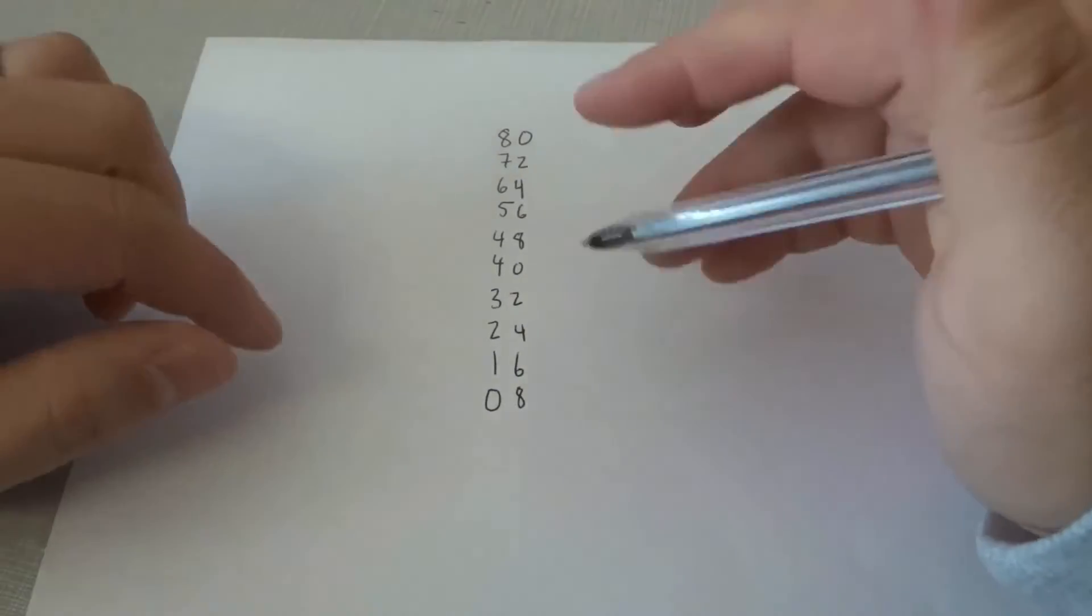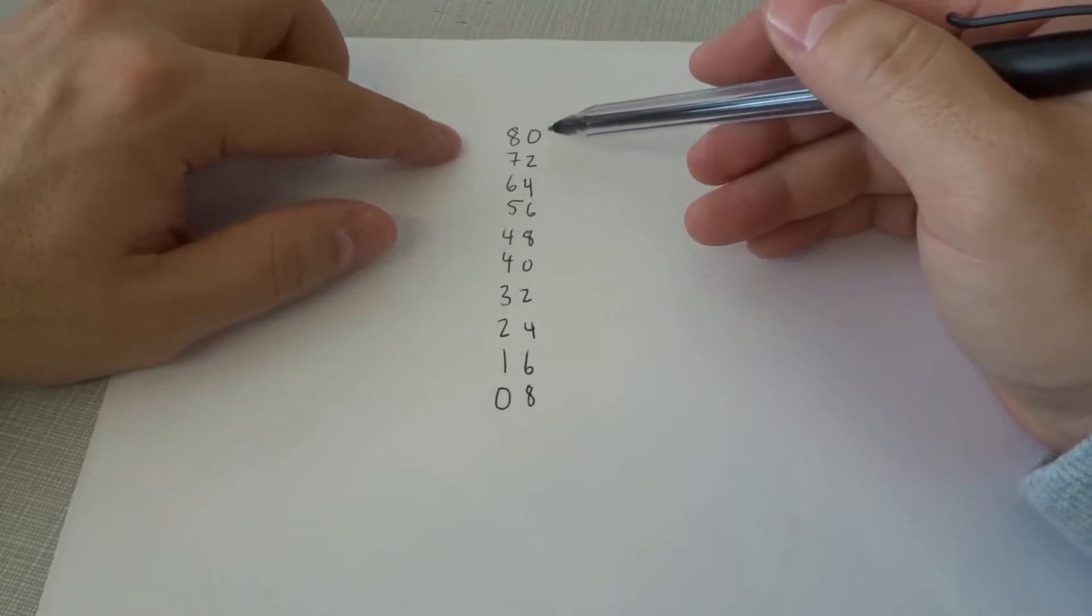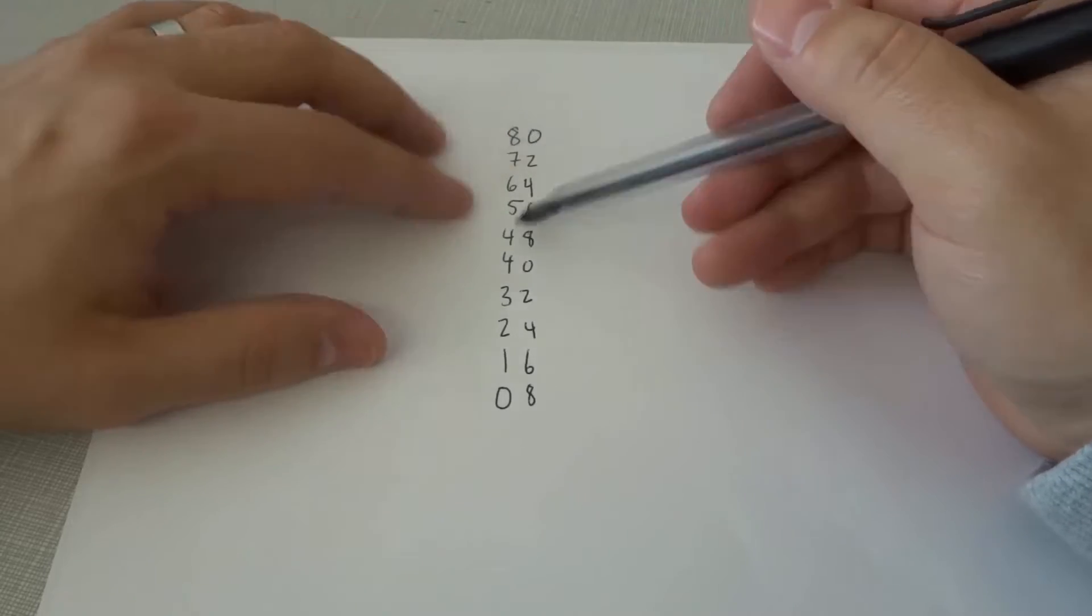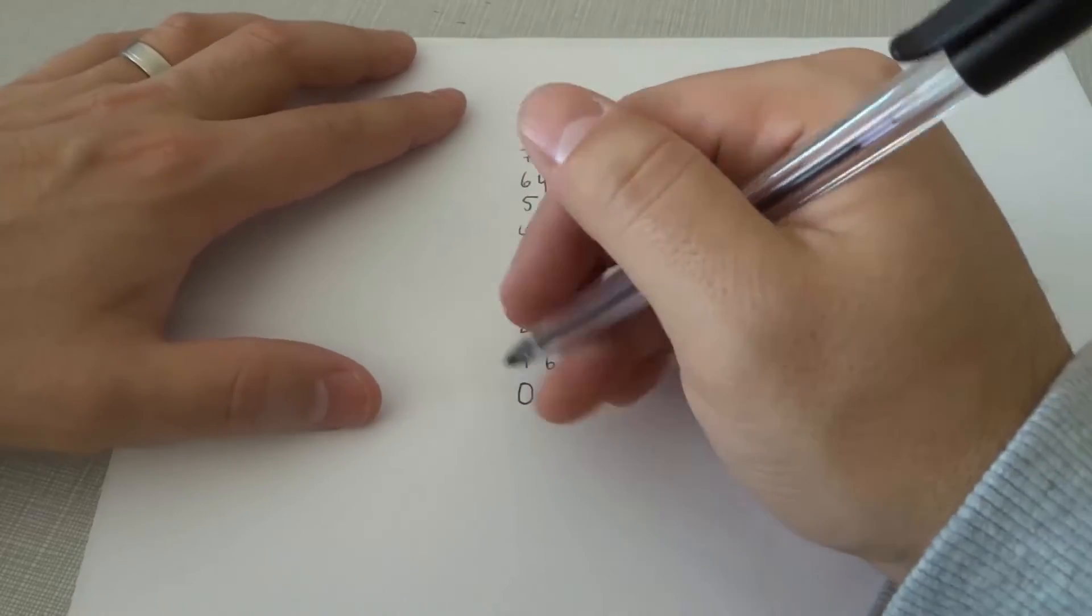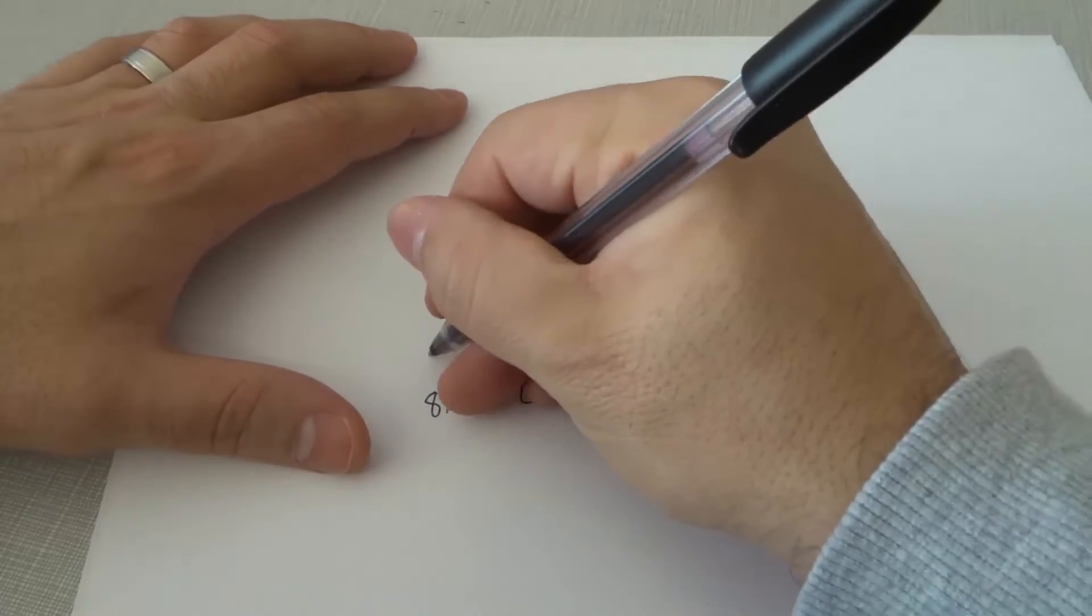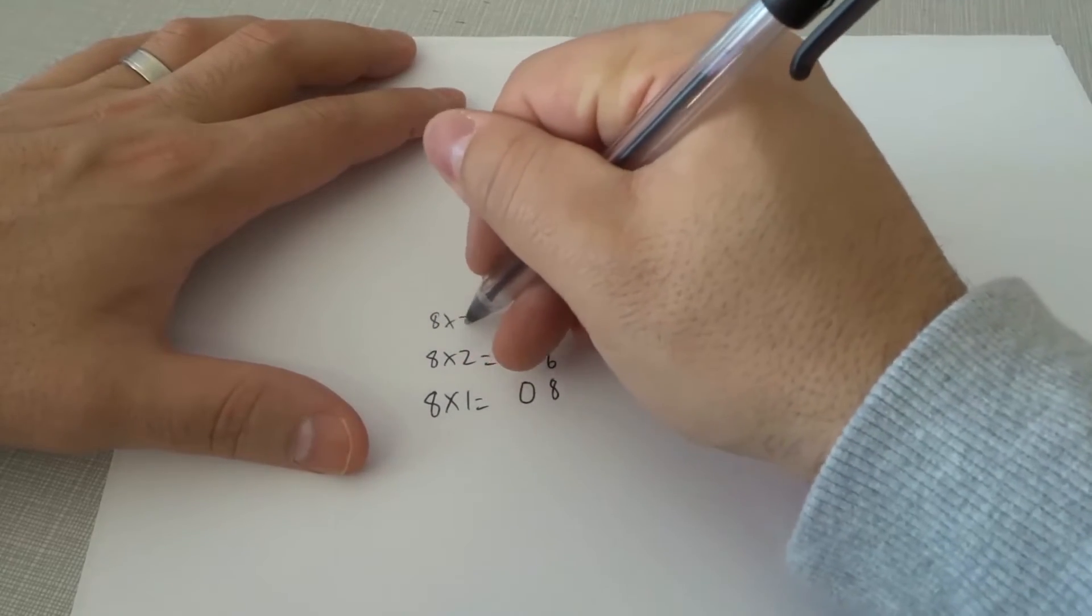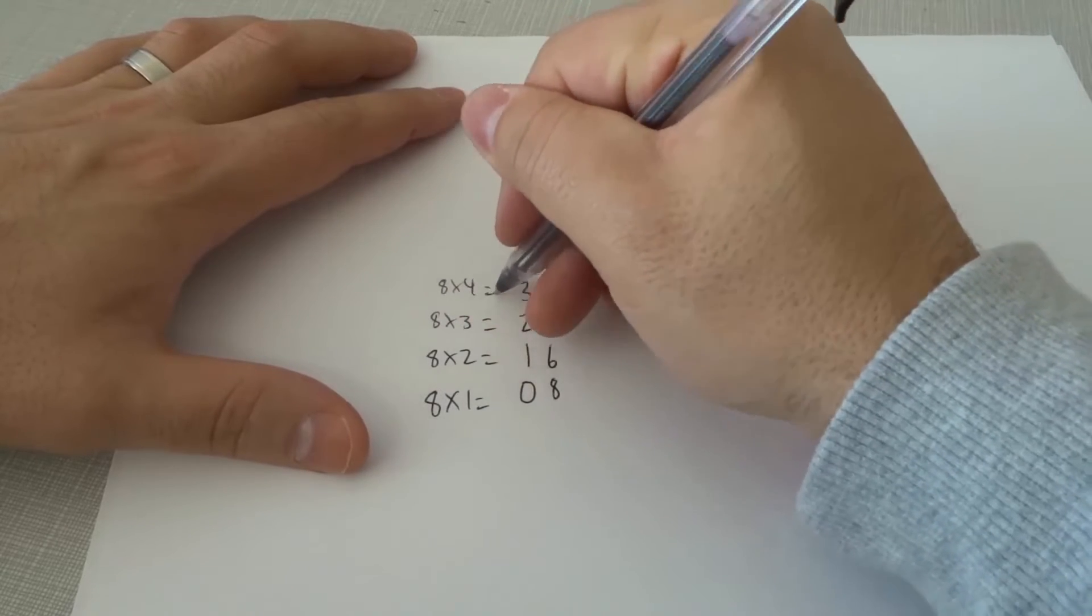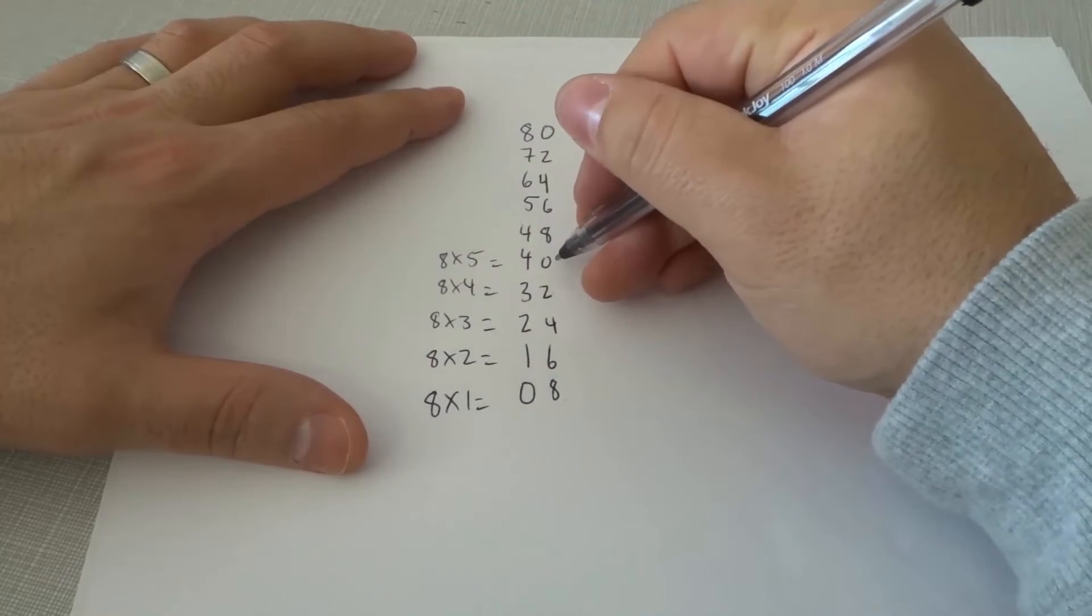Now what we've actually done is we've written down the answers for the 8 times table, the 8 multiplication table, from the highest number to the lowest number. So we've written down 8 times 1 is 8, 8 times 2 is 16, 8 times 3 is 24, 8 times 4 is 32, 8 times 5 is 40.